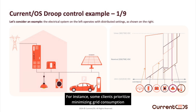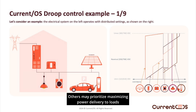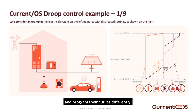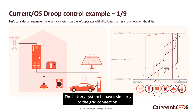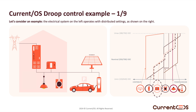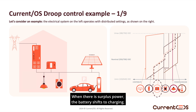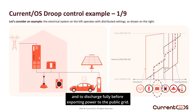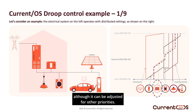For instance, some clients prioritize minimizing grid consumption and might reduce imports as soon as voltage starts rising. Others may prioritize maximizing power delivery to loads and program their curves differently. The battery system behaves similarly to the grid connection — it contributes power when voltage is low, then gradually reduces its output and eventually stops. When there is surplus power, the battery shifts to charging. In this example, the battery is programmed to contribute before importing from the grid and to discharge fully before exporting power to the public grid, supporting an energy self-consumption strategy.